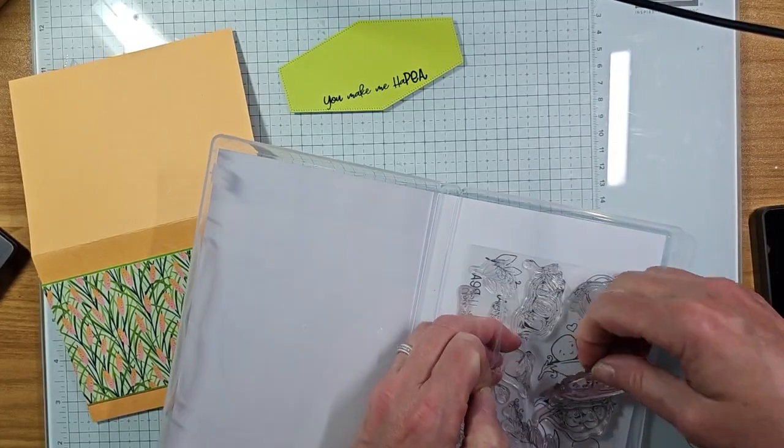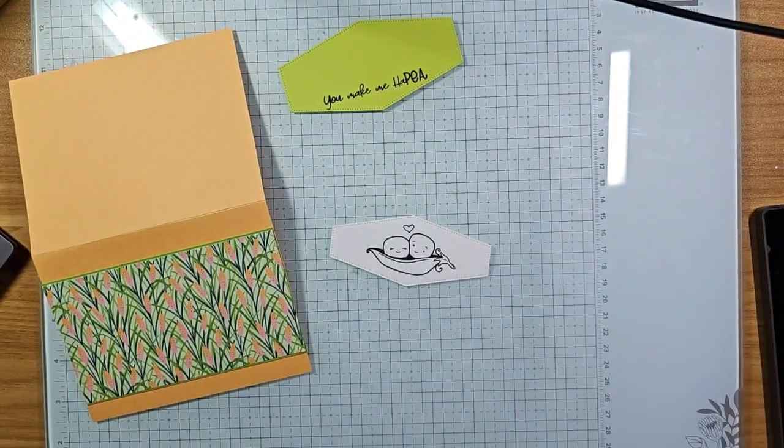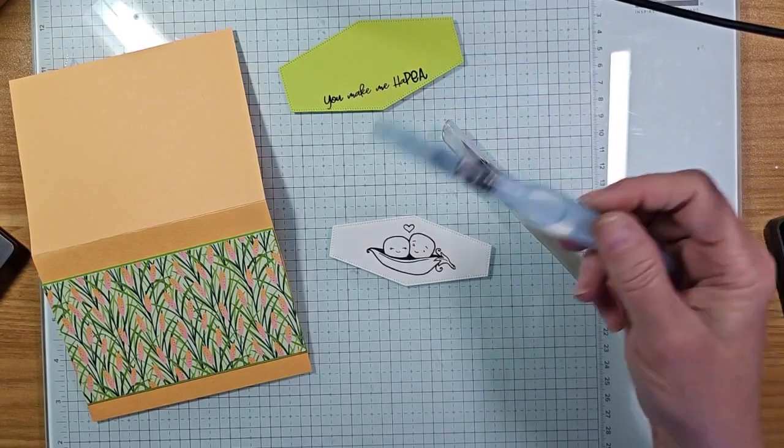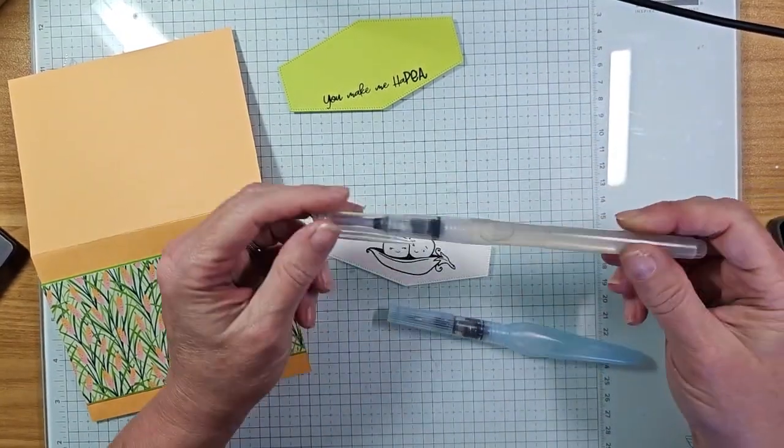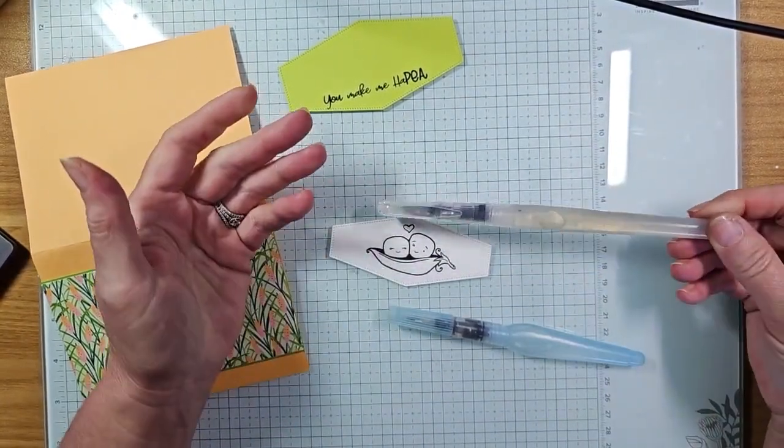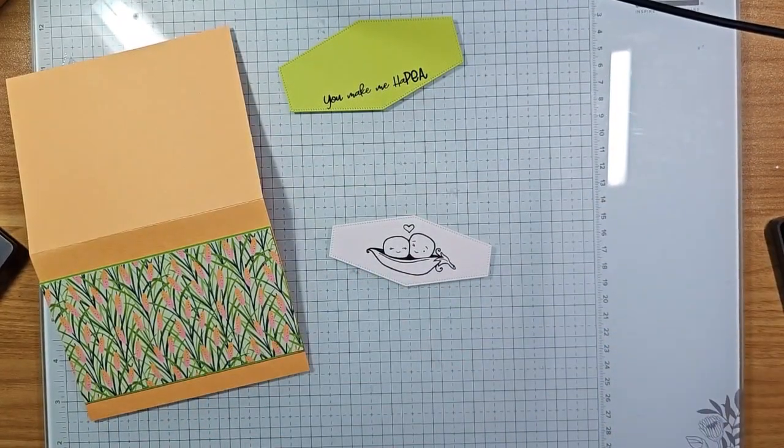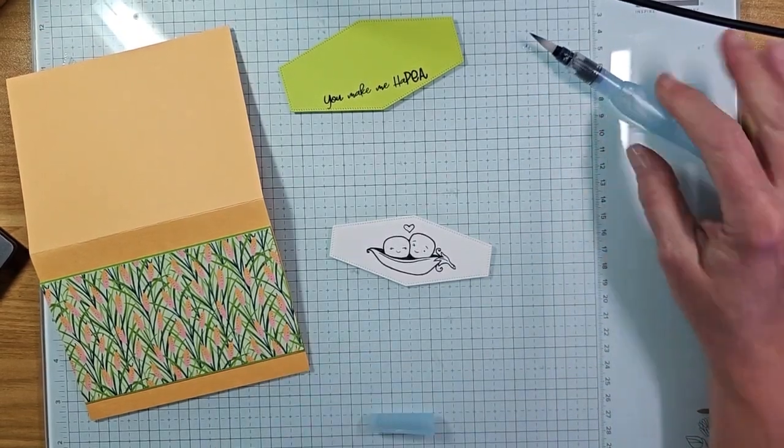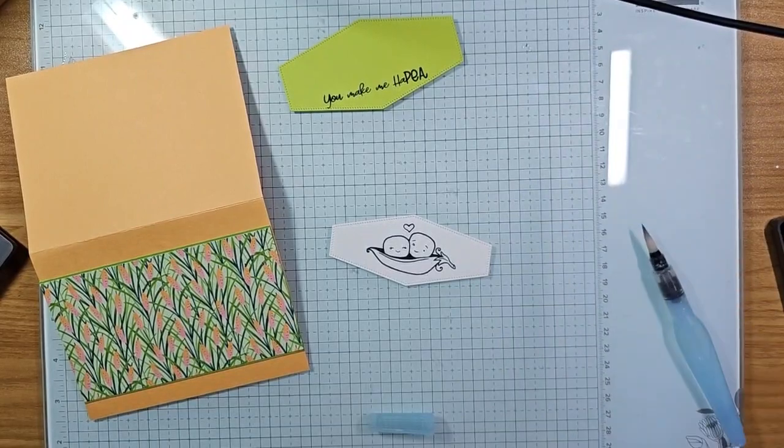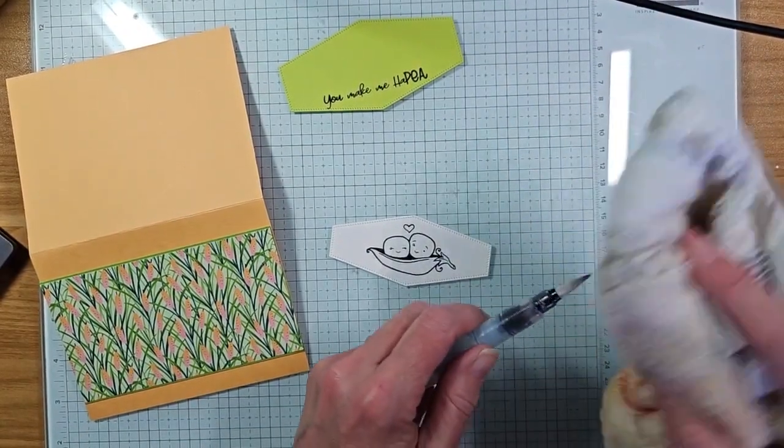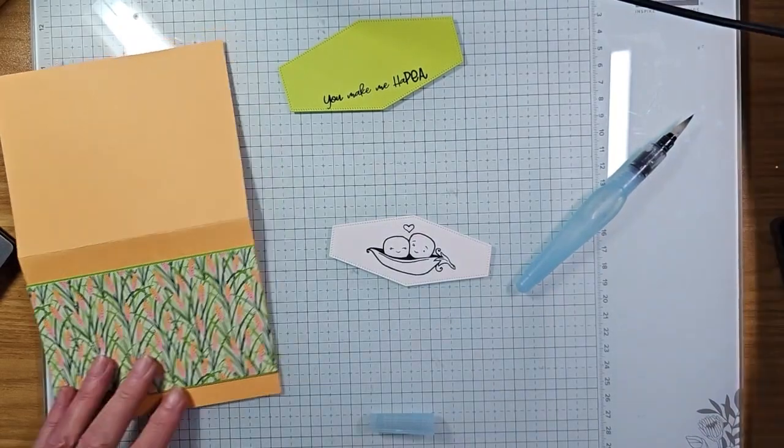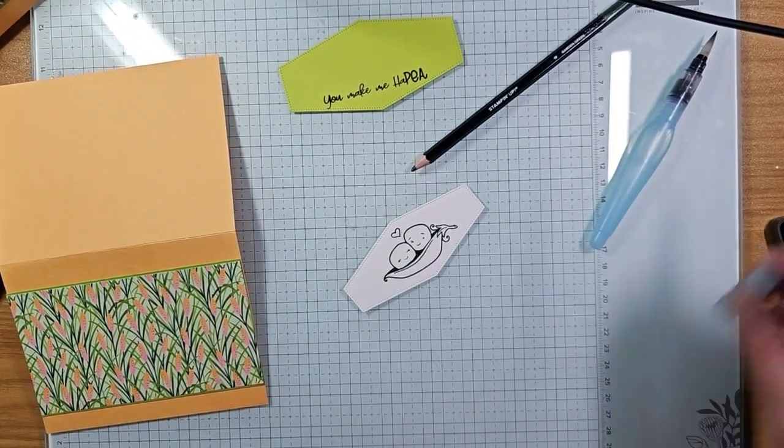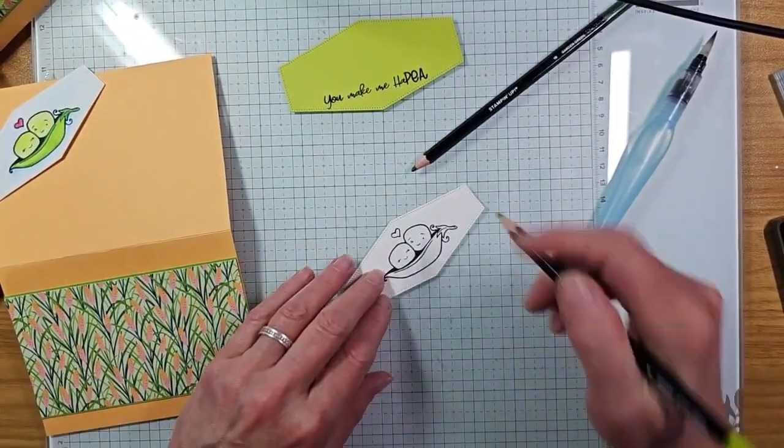I just realized I don't have my towel here, so I need to grab that. I have a little rag here that I use when I'm doing my watercoloring. The reason I have that out is so that I can dab some of the water off my aqua painter. Now I have two different aqua painters. This is an aqua painter from before, this is a water painter, just different names, a little bit different style, but they do serve the same purpose.